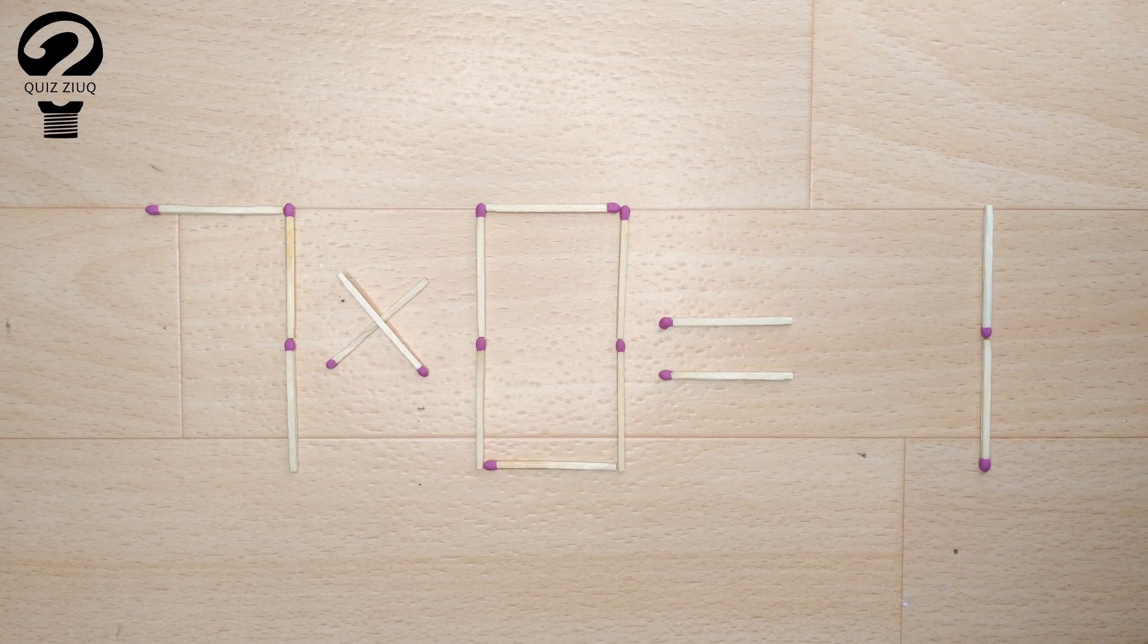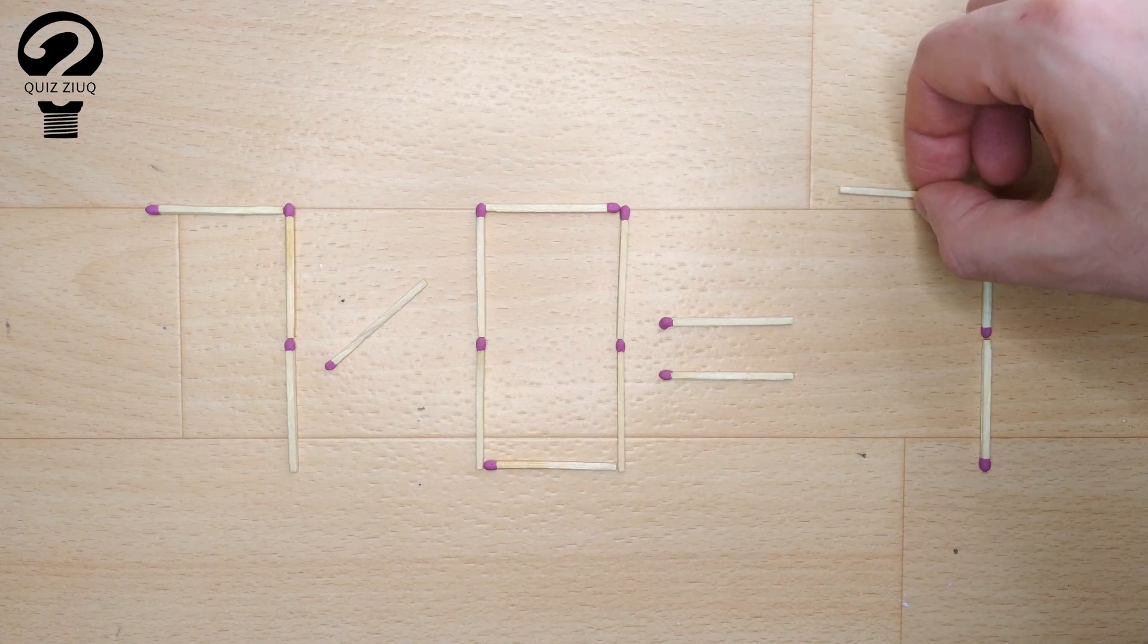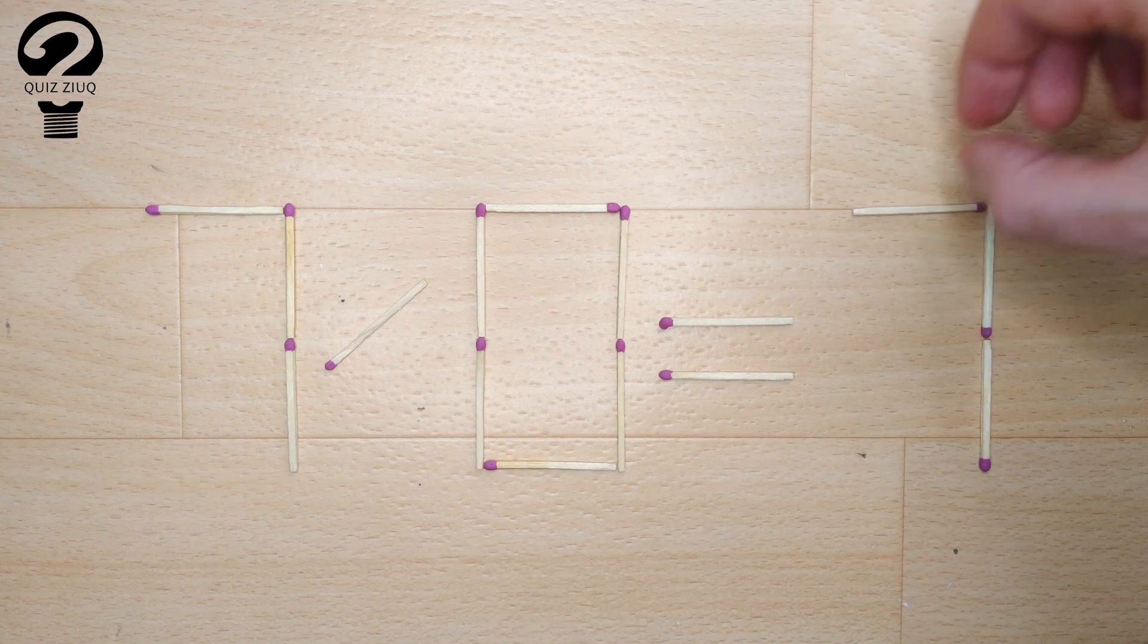And now, when we check the condition, seven minus zero equals seven. Seven equals seven. Our equation is correct.